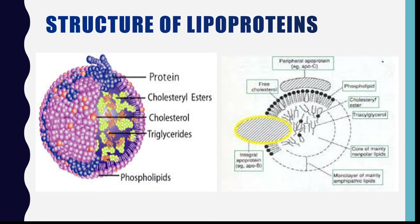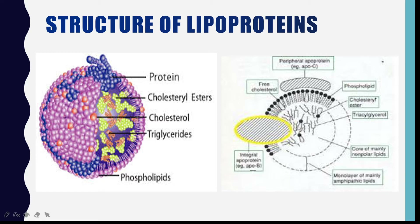These apoproteins present on the surface of lipoproteins make the lipids more soluble in plasma. Such apoproteins include apoprotein A, apoprotein C, D, E, apoprotein B100 and B48. Some apoproteins are present as integral apoproteins — for example, apoprotein B — and some may act as peripheral apoproteins, for example apoprotein C.